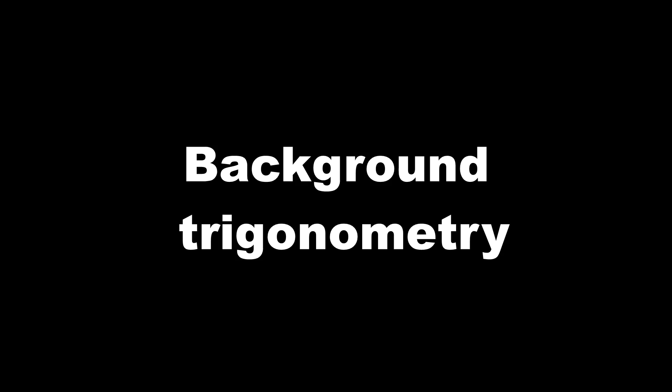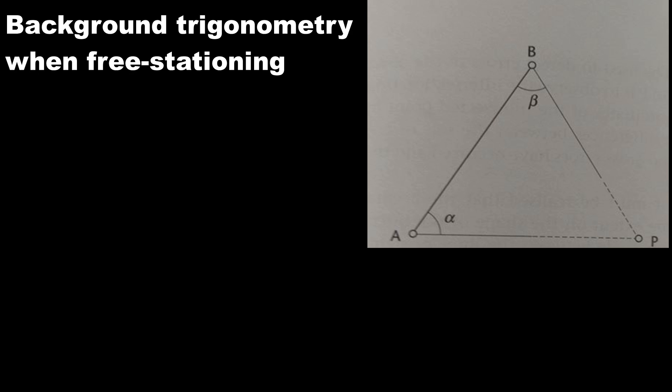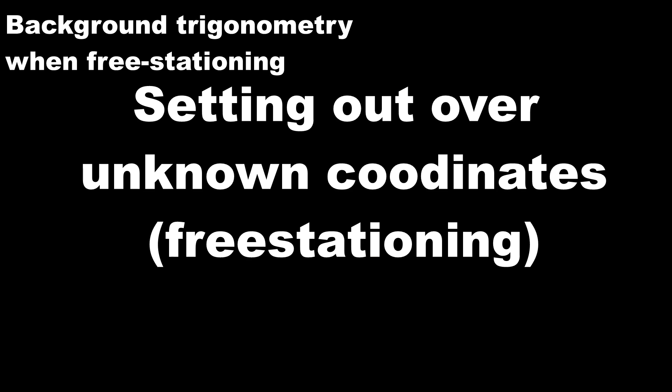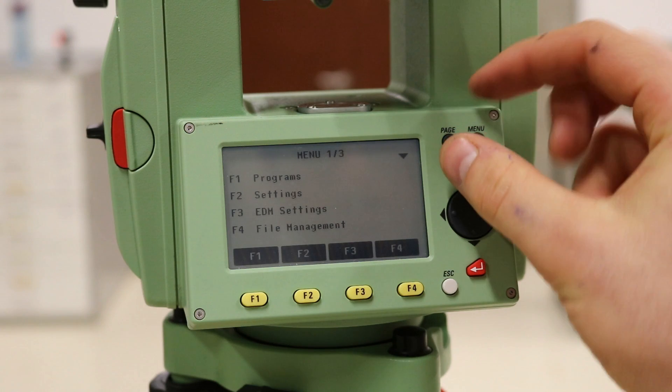So, a little information on the background trigonometry that the total station does when setting up. When free stationing, assume that the machine is placed at point P, which the coordinates are not known. If you shoot at known points A and B, whose coordinates are known, then the machine can work out the angle alpha and beta, and thus, using the equation shown, the easting and northing of P can be gotten.